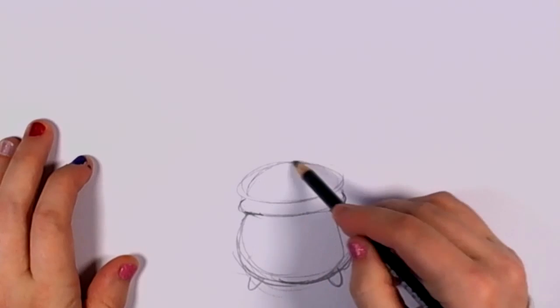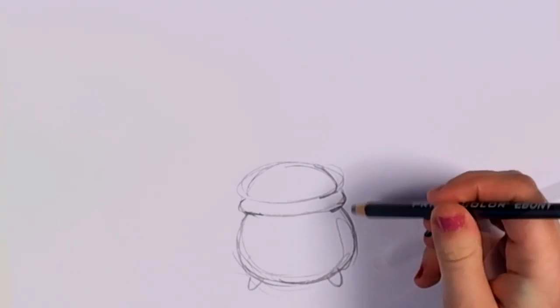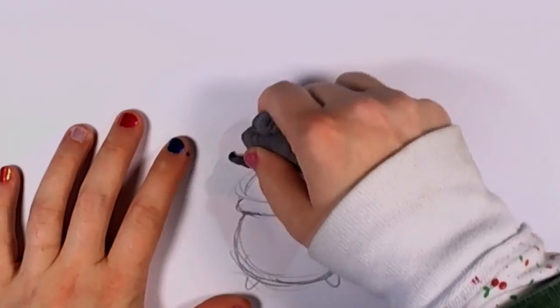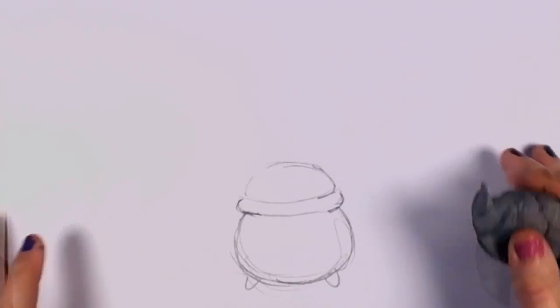And I'm going to fix up the mound of gold in the middle there and erase what I don't need. There, now it looks like a proper mound sitting in our pot.